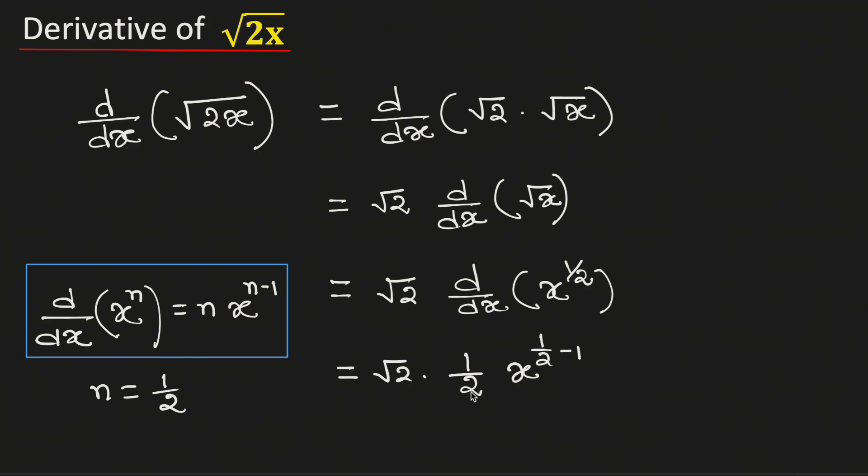Now see that root 2 by 2 can be written as one by root 2, and x to the power one by two minus one can be written as x to the power minus one half.